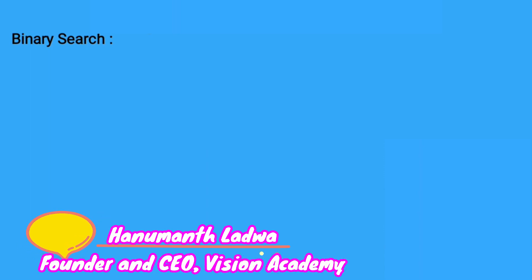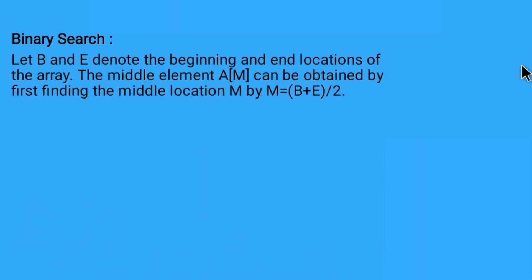Binary search works very well only when all the elements in an array are arranged in a proper order. Let us continue with the rules of writing the binary search algorithm. Let b and e denote the beginning and end locations of the array. The middle element a of m can be obtained by first finding the middle location m, where m is equal to beginning plus ending divided by 2.